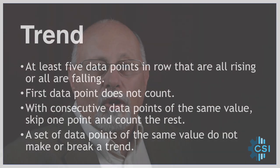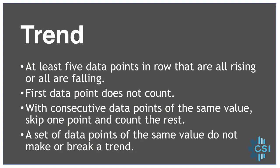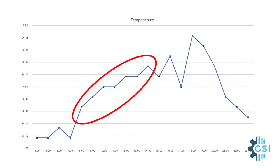Each of these rules reveals a statistical signal in the data strongly suggesting that the process has changed. The first run chart rule we'll cover is for trends. In the context of run chart data interpretation, there is a trend when there are at least five data points in a row that are all rising or all falling. If you see adjacent data points with the same value, skip one point and count the rest — a set of points with the same value will not make or break the definition of a trend. This sort of pattern does not occur randomly.